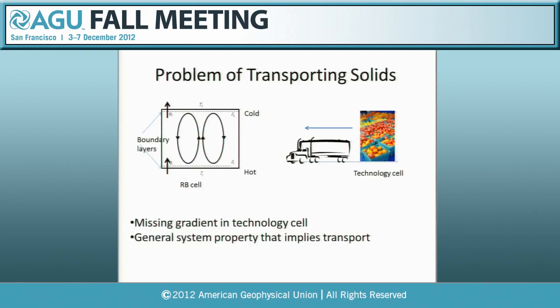The problem with transporting solids is that in a fluid — in the Rayleigh-Bénard cell — a constant force field exists across the cell, giving rise to a continuous buoyancy force that drives convection. But in the technology cell, where solid or semi-solid goods need to be transported to another area, there exists no extant potential that would produce a force to move the material from the production zone to the consumption zone. There's a missing force gradient in the technology cell — a problem that nature only solved recently. To understand how you can have transport without an intervening force field, we have to enlarge our picture of how transport works.